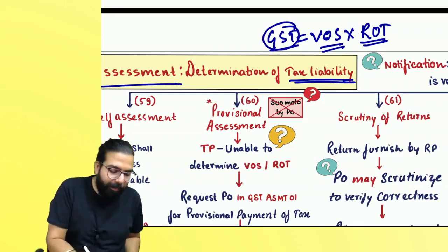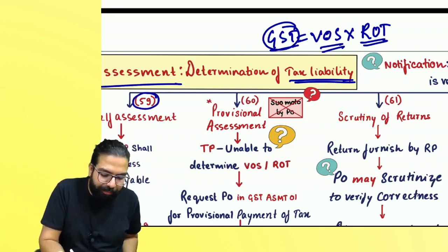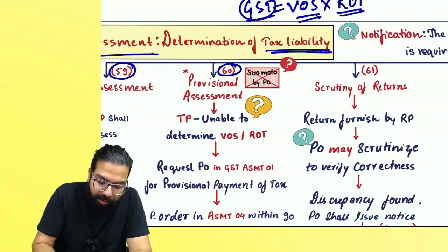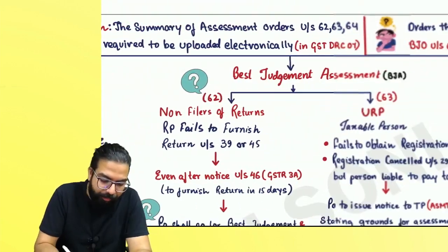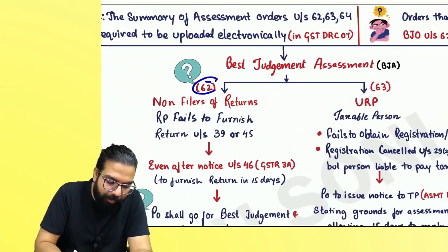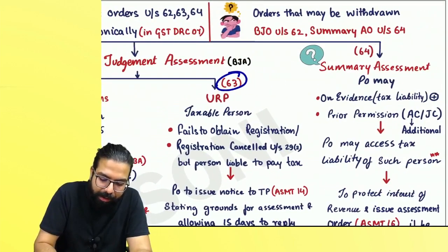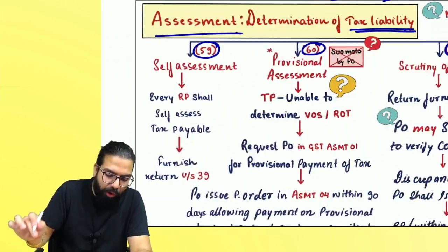In the assessment chapter, we learn section numbers 59, 60, 61, 62, 63, and section number 64.